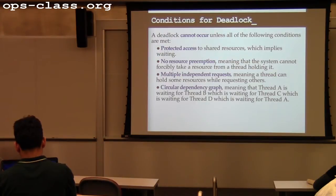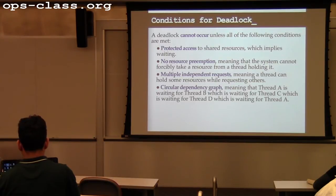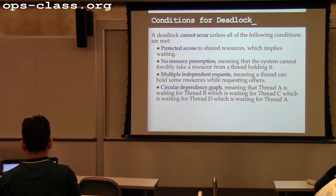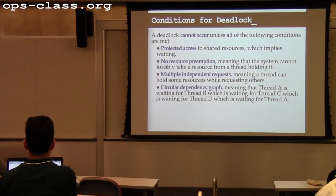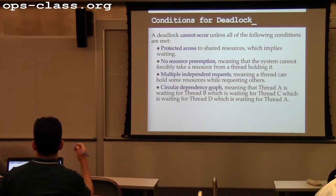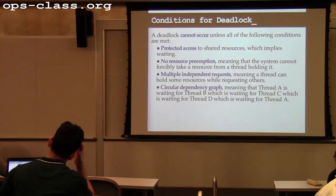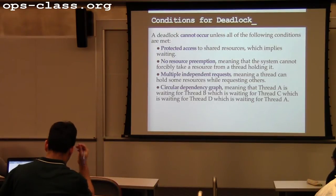The most common way of avoiding deadlock is breaking the circular dependency graph. The circular dependency graph condition means that when you look at the resources being acquired and the threads trying to acquire them, there's a circularity. In the self-deadlock case, that circularity is on the same thread. Normally you'll see deadlocks between multiple threads — for example, thread one has resource A and wants resource B, thread two has resource B and wants resource A. That gives you a circle with two nodes.